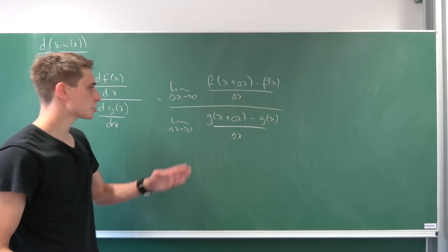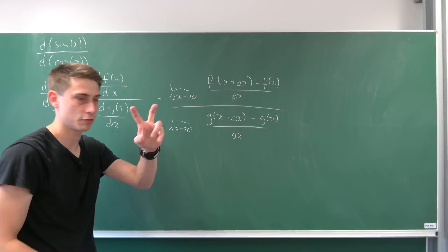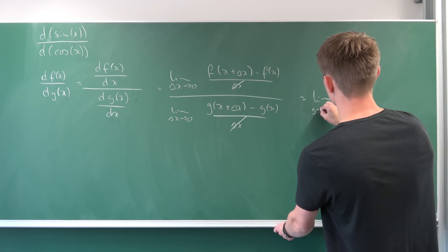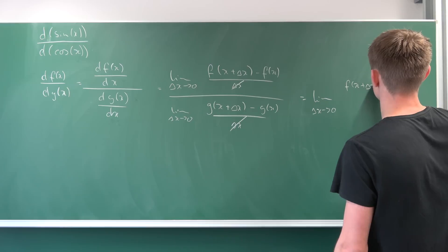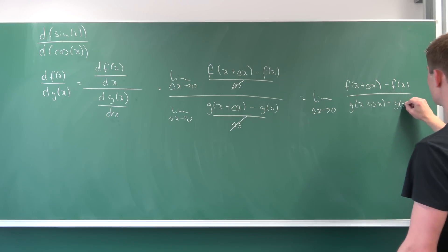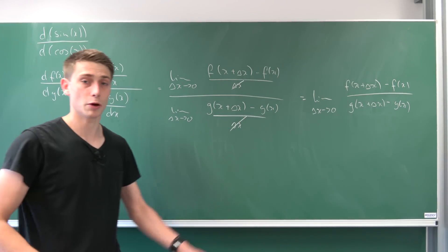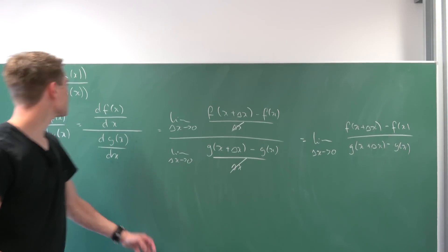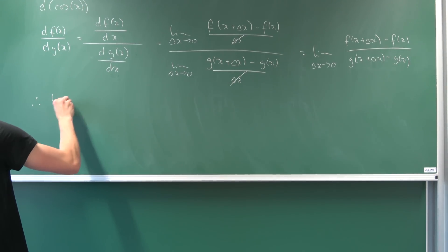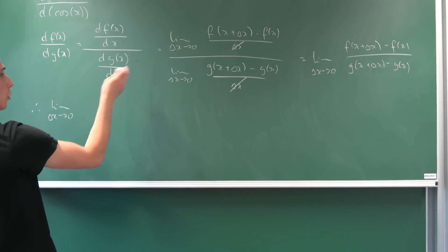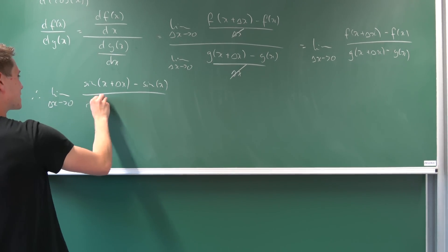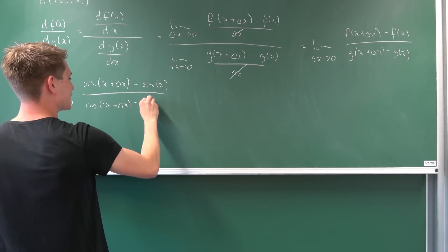The good thing is we can use the rules for limits to bring the limit to the outside and cancel the delta x terms. So what we end up with is just the limit as delta x approaches 0 of [f(x + Δx) − f(x)] / [g(x + Δx) − g(x)]. Now we plug in: f(x) is sine and g(x) is cosine, so we have the limit as delta x goes to 0 of [sin(x + Δx) − sin x] / [cos(x + Δx) − cos x].